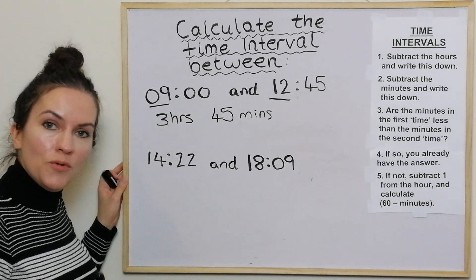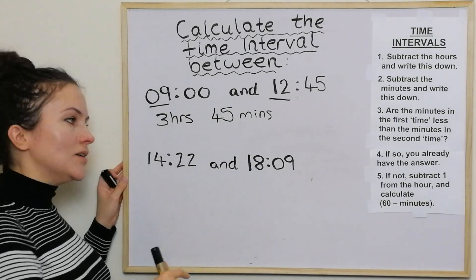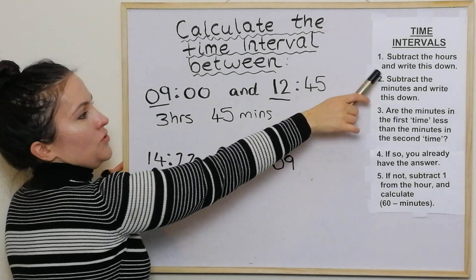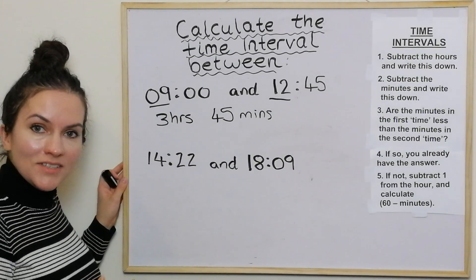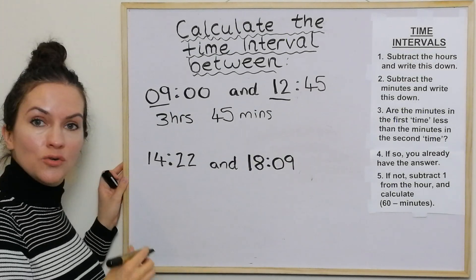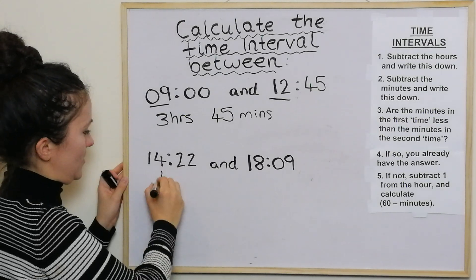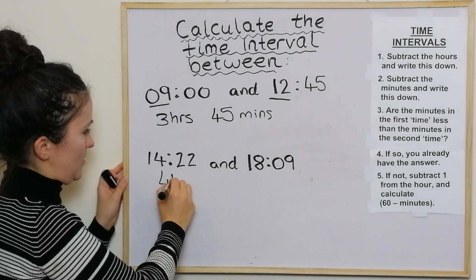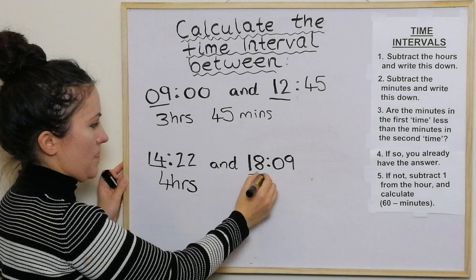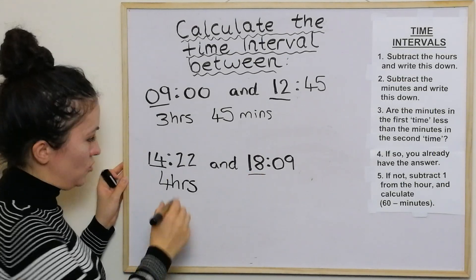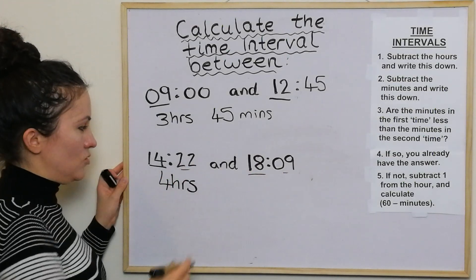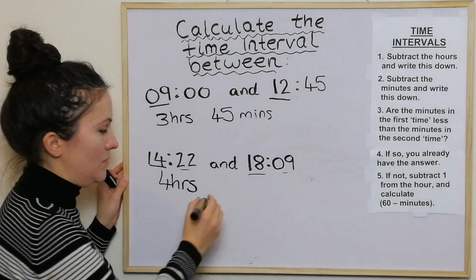This next one is a little bit more difficult. The first step is to subtract the hours and write it down. So we do 18 take away 14, which is 4 hours. Then we subtract the minutes — we've got 22 and 9, so when we take those away from each other we get 13 minutes.